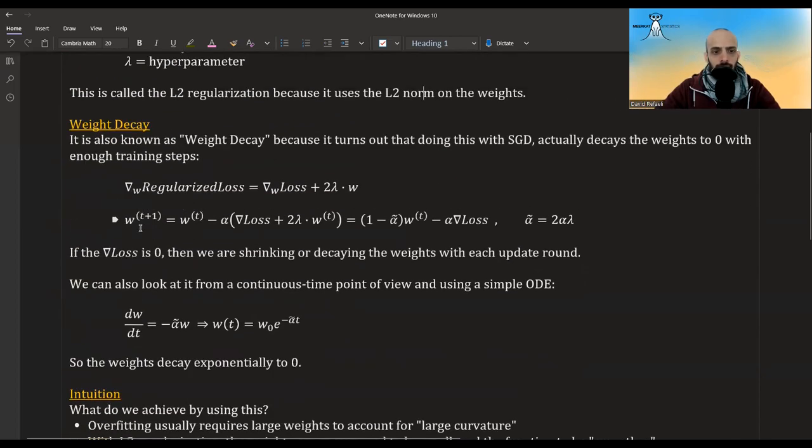When you do gradient descent, the new weights equal the old weights minus some learning rate step times the derivative. If we now pull in the w's together, we get that it's equal to one minus this term here times the w, minus alpha times the derivative with regards to the old loss. This alpha tilde is just two times lambda times alpha.